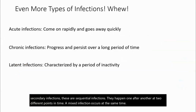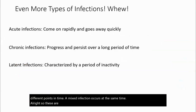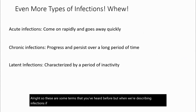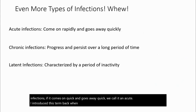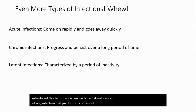These are some terms you've heard before. When describing infections, if it comes on quick and goes away quick, we call it acute. Any infection that just kind of comes out of nowhere but goes away pretty quickly is an acute infection.